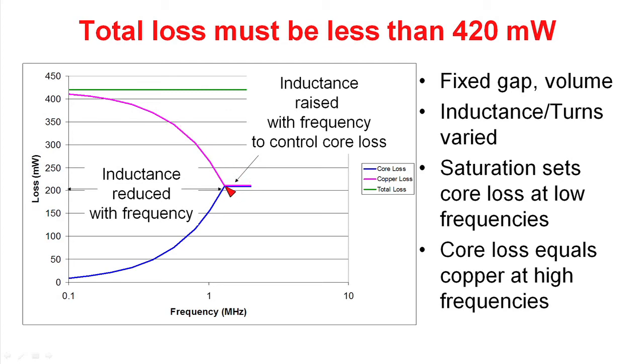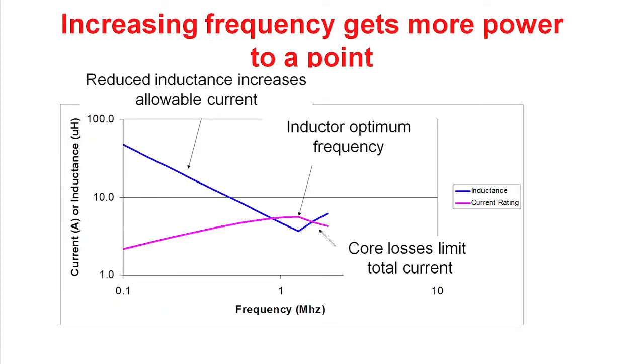That's the optimum point for this inductor. This is the point where you're going to get the maximum power out of the inductor. As we go to higher and higher frequencies, we have to reduce our peak current to maintain an equal core loss.